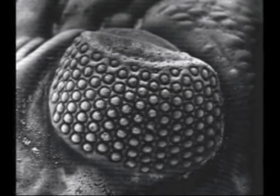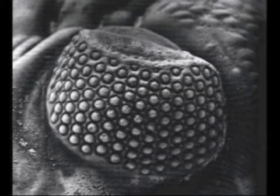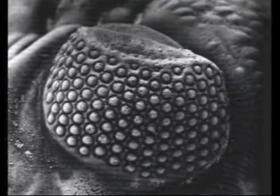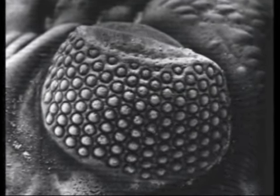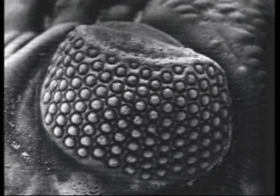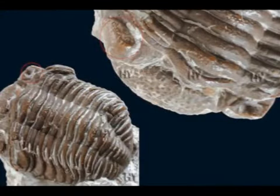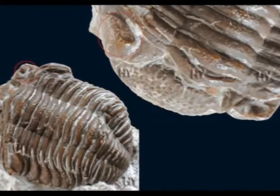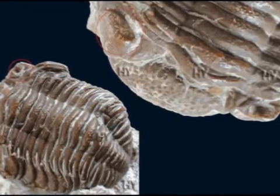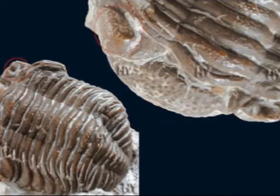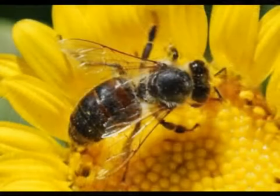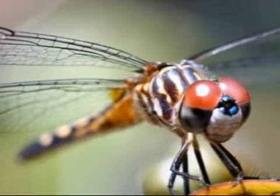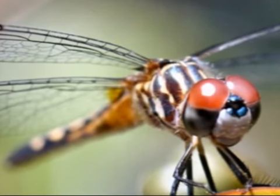This is the first eye that appeared on earth, and it definitely refutes the Darwinist claim that life evolved from the very primitive towards the complex. Moreover, the honeycomb eye structure of trilobites has survived since 530 million years without a single change. Modern insects such as bees and dragonflies have the same eye structure as did the trilobite.